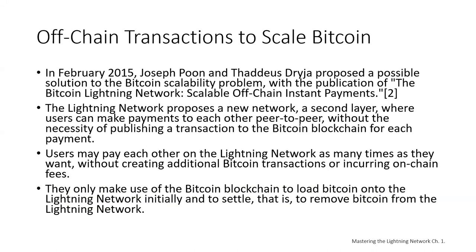But what if each node wasn't required to know and validate every single transaction? What if there was a way to have scalable off-chain transactions without losing the security of the Bitcoin network? In February 2015, Joseph Poon and Thaddeus Dryja proposed a possible solution to the Bitcoin scalability problem with the publication of their white paper: 'The Bitcoin Lightning Network: Scalable Off-Chain Instant Payments.'